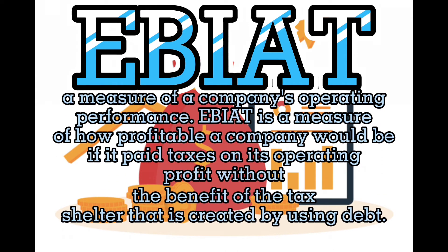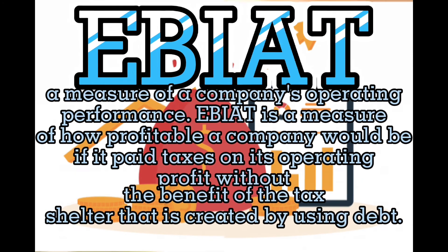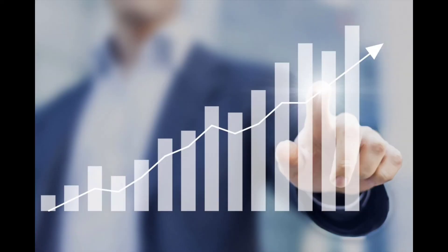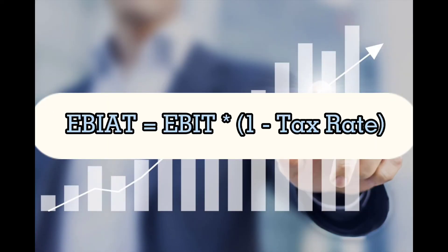Next we have EBIAT, or the Earnings Before Interest After Taxes. EBIAT is a measure of a company's operating performance. It measures how profitable a company would be if it paid taxes on its operating profit without the benefit of the tax shelter that is created by using debt. EBIAT is useful for analysts who wish to look at a firm's performance while accounting for the tax environment in which it operates. To calculate the EBIAT, the formula is: EBIT times (1 minus tax rate).